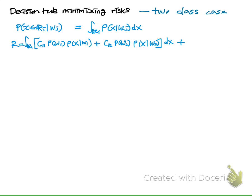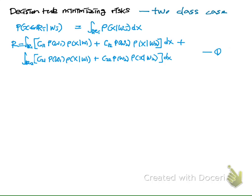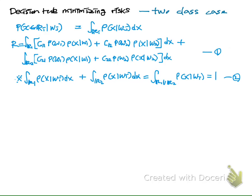Given this definition, we compute the total risk. The total risk includes the correct classification of class 1 and the misclassification of class 2 into class 1, computed over region 1, and the misclassification of class 1 and the correct classification of class 2, computed over region 2. We use the relationship that for each class, the sum of probabilities of correct classification and misclassification equals 1.